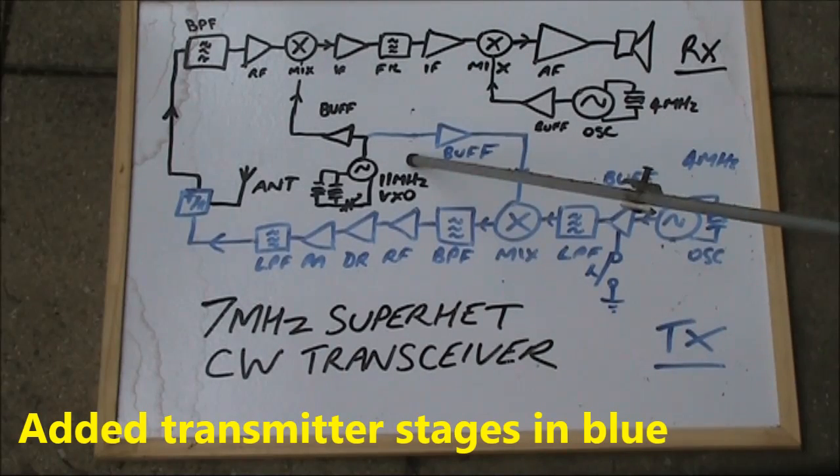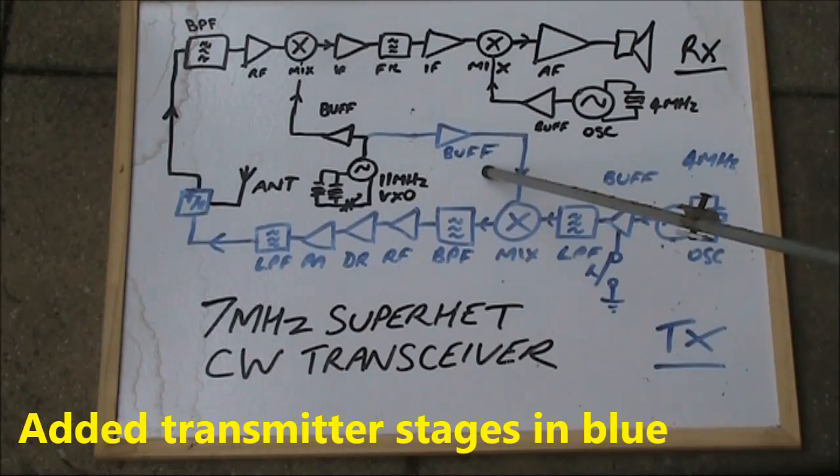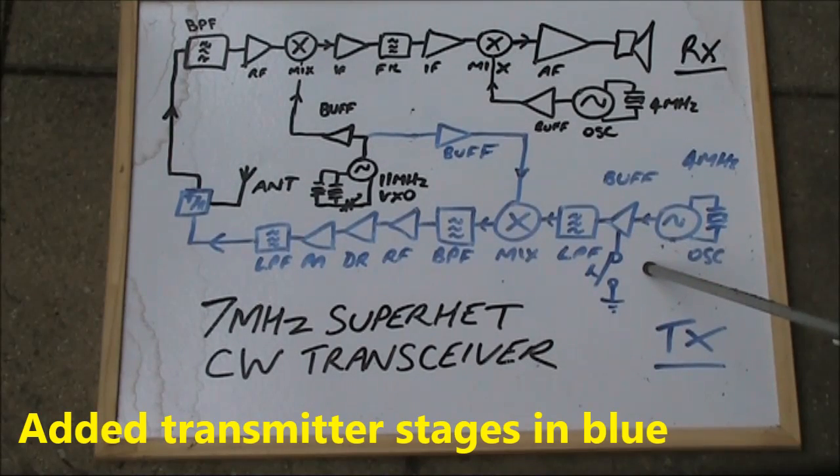On transmit, we're also using the 11MHz VXO signal. Another buffer, it's being mixed here with another locally generated 4MHz signal. That signal, though, is keyed.